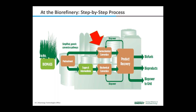Thermochemical conversion — indicated by the red arrow — uses heat as the primary mechanism for converting biomass into a gas or liquid intermediate. These intermediates are then upgraded by removing oxygen using catalysts — substances that increase the rate of a chemical reaction — to create an oil composed of hydrogen and carbon that can be blended with existing liquid fuels, used to create products, or generate biopower. Biochemical conversion — indicated by the blue arrow — uses mild heat, mechanical, and chemical processes to break down the biomass into intermediates such as carbohydrates, which are further broken down into sugars. Catalysts, either biological like enzymes and organisms, or chemical in nature, then convert the sugars to liquid fuels or other chemicals.